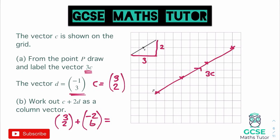We doubled vector D. Adding: 3 and minus 2 gives 1 on the top, and 2 and 6 gives 8 on the bottom. There is our final vector — 1 over 8. That's how we approach these when done graphically.